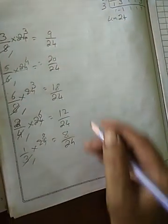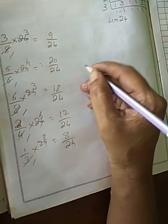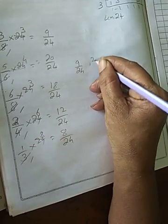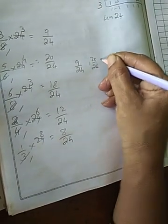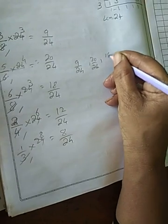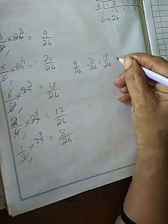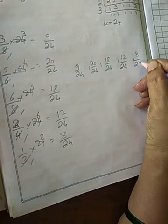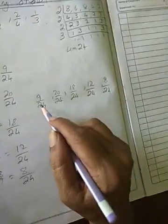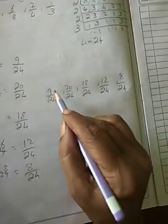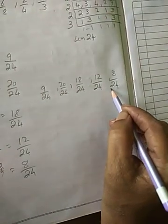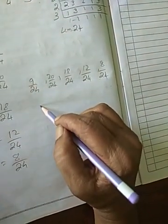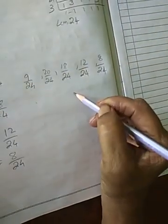Now write here all the fractions. Denominator are same, no? So write all: 9 by 24, next 20 by 24, 18 by 24, 12 by 24, 8 by 24. Ok children. Here ascending order means what? Small number first. Denominator are same now — see the numerator. Which is smaller one? That one first. Next, like that.